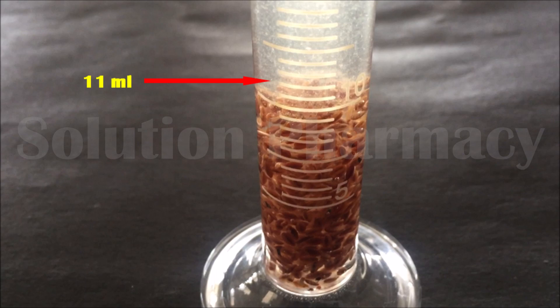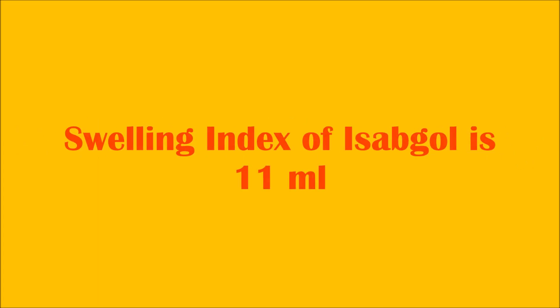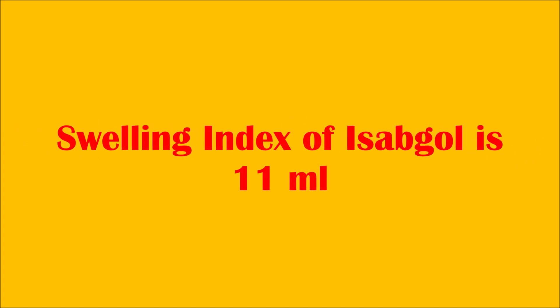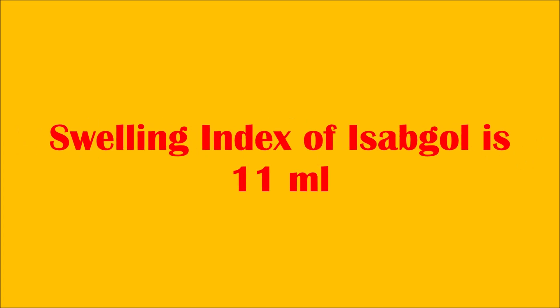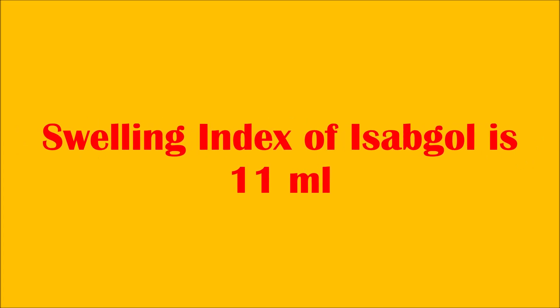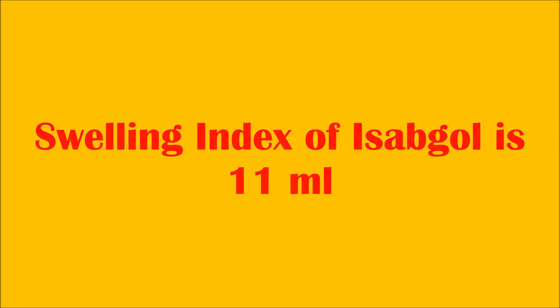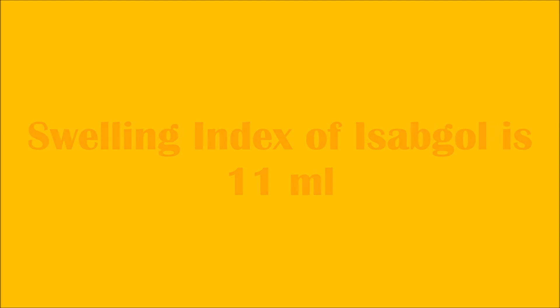Each division of the measuring cylinder is 0.5 ml. The volume occupied is 11 ml, which is within the standard value of the swelling index of isabgol — that is, 10 to 14 ml. In other words, the swelling index of isabgol should not be less than 10.